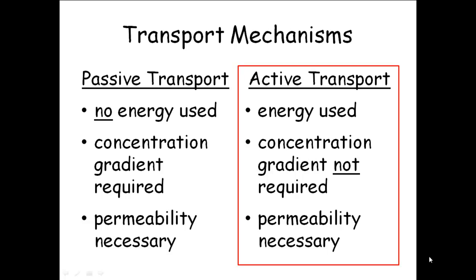If you're going to use passive methods, you've got to have that concentration gradient. There's got to be a difference in concentration, and the membrane has to be permeable. If it's going to be a sodium ion, there's got to be a sodium ion channel there. If there's more sodium outside than inside and there's no sodium channel, nothing's going to happen. The membrane itself has to be permeable to the substance.